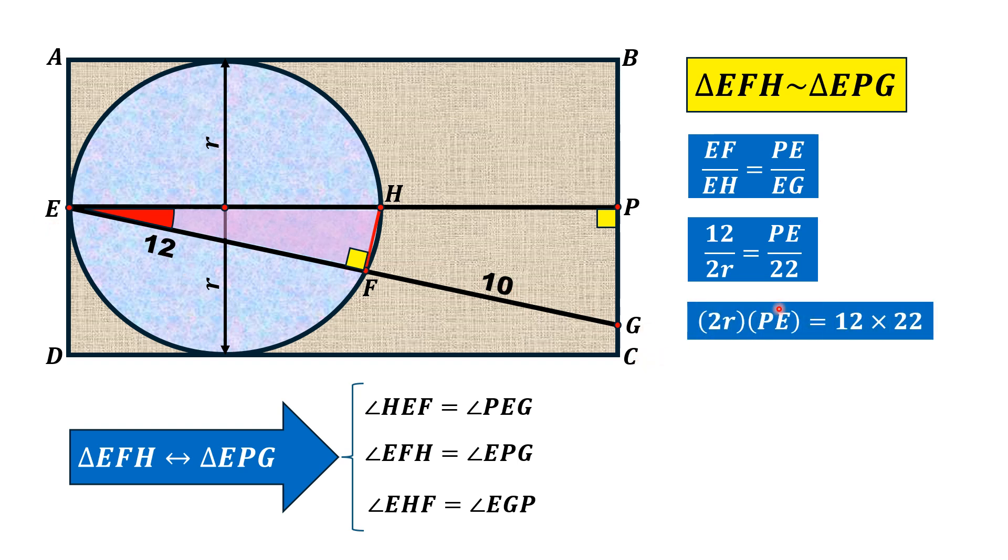So from here, if we cross multiply, then we will get 2R times PE equals 12 times 22.